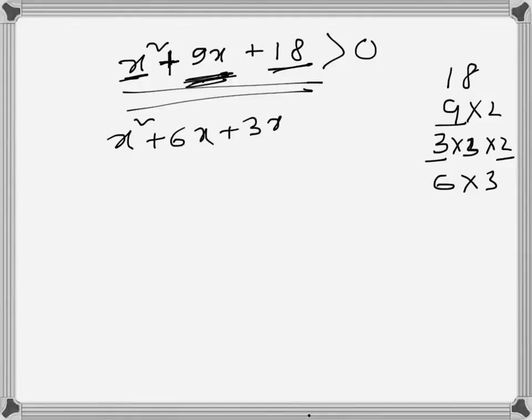Basically, 18 times x² is 18x², and 6x times 3x is 18x². So it should work. Now I will try to factorize. Here it stays as greater than 0.